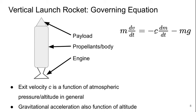Now this exit velocity c is going to be a function of atmospheric pressure and altitude in general. And the gravitational acceleration is also a function of altitude, especially if we're talking about going to very high altitudes in space.